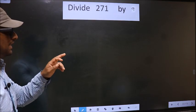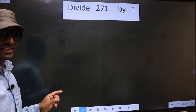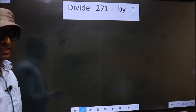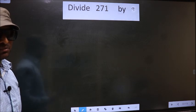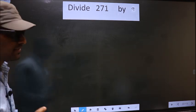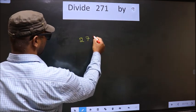Divide 271 by 9. While doing this division, many do this mistake. What is the mistake that they do? I will let you know, but before that we should frame it in this way: that is 271.